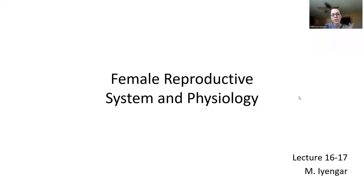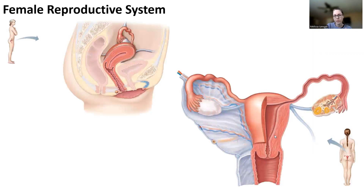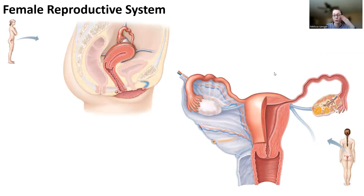All right, everybody. So for this video, I'm going to go through some aspects of the female reproductive system. The first one is just going to be anatomy of the female reproductive system — mostly the things I think you guys have the most difficult time with, like understanding, because they're on a two-dimensional picture but it's a three-dimensional concept.